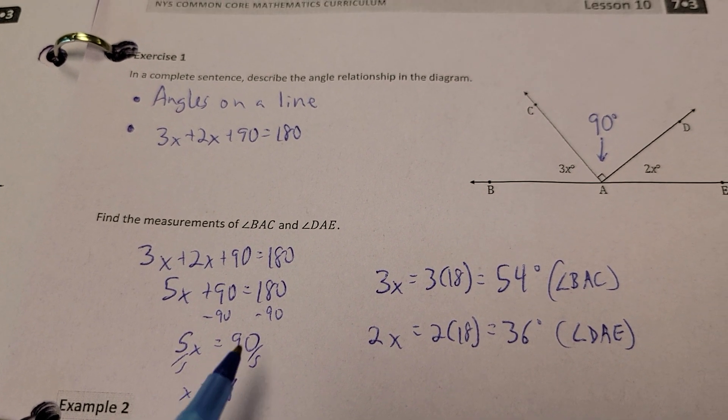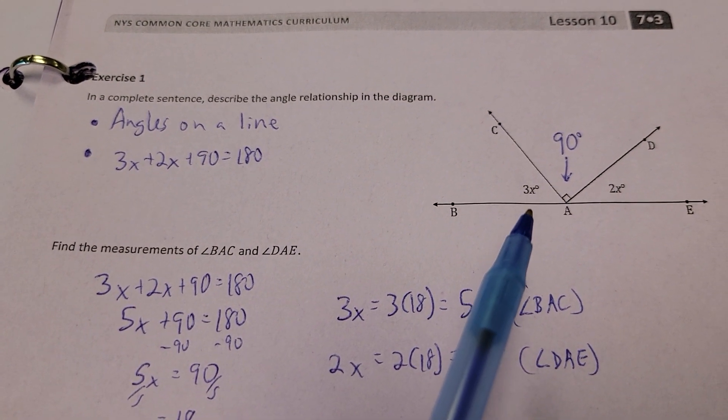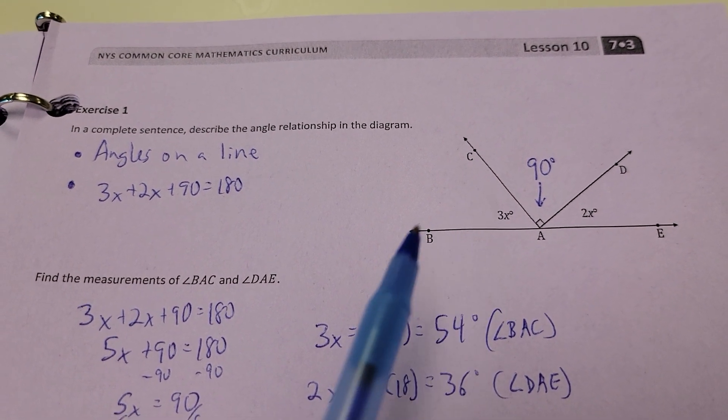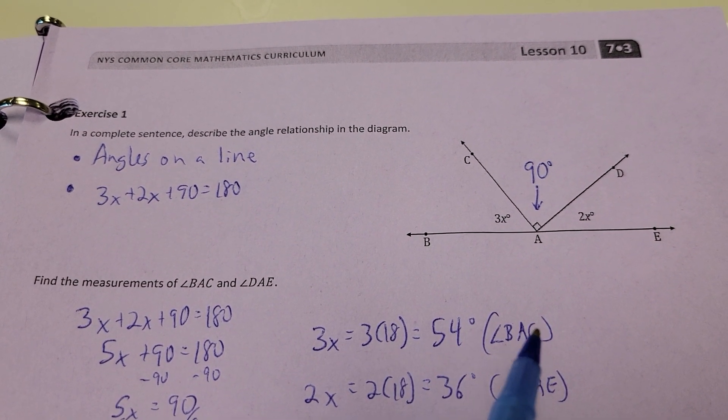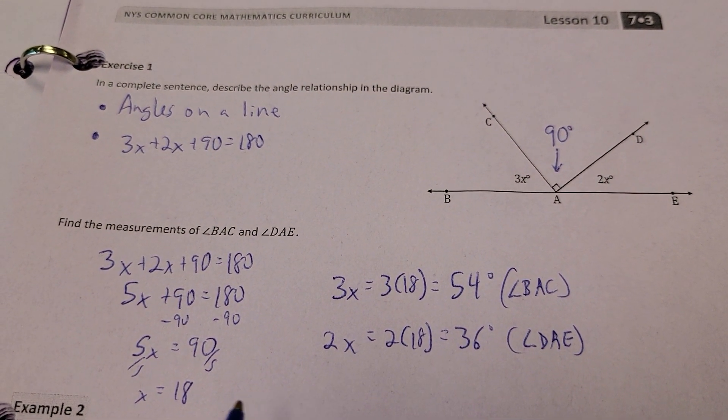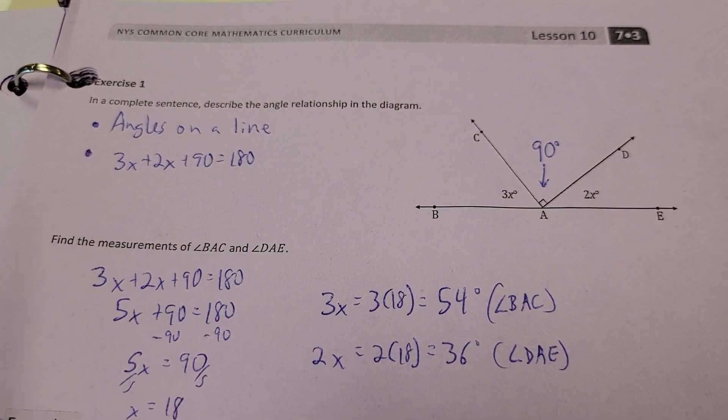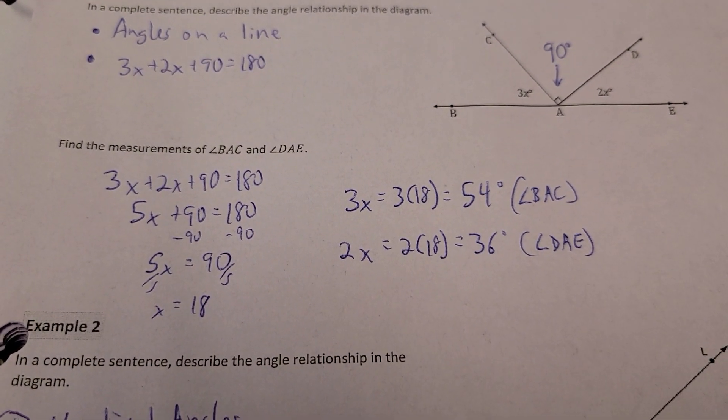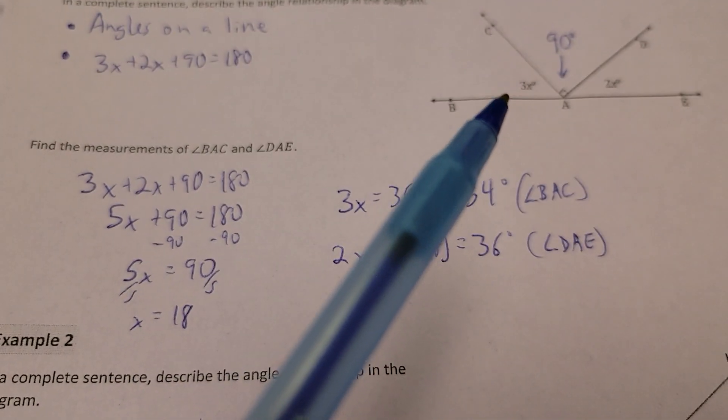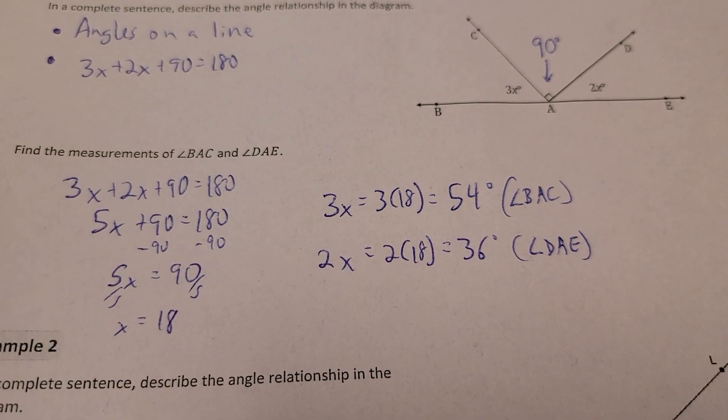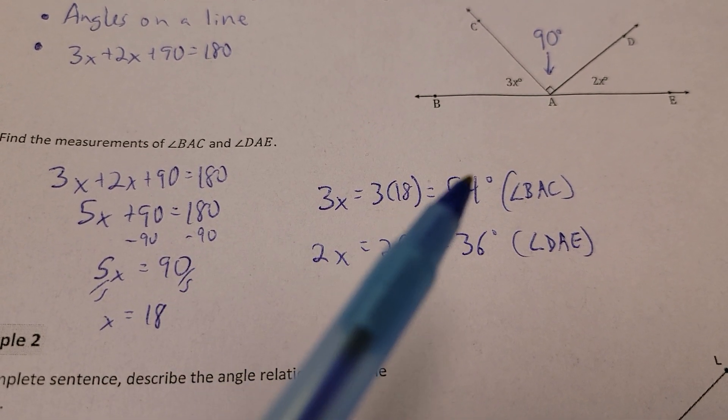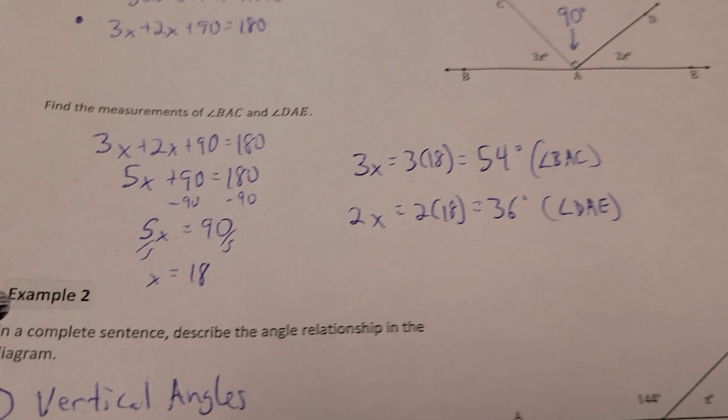But you're not done yet. Because you're looking for 3X and you're looking for 2X. Because we're looking for the measurements of BAC, which is the 3X. So, 3 times 18 gives you 54. And angle DAE, well, that's 2X. So, 2 times your X answer is 36. So, that's an important thing. Sometimes you're going to find just the X and that's it. Other times, once you find out what X is or whatever letter you're dealing with, look back to the picture to say, do you need 3 times something? Do you need 2 times something? Because if you just typed into Schoology the 18 for your answer, it's going to be wrong. Because you actually need 3 times 18 and 2 times 18.